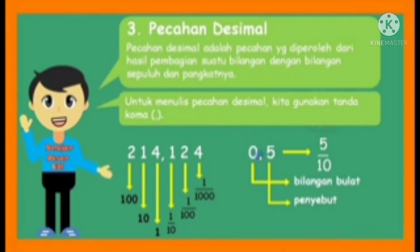Berarti jika 0,5 diubah dalam bentuk pecahan biasa akan menjadi 5/10. Kemudian untuk contoh lain, semua angka di belakang koma ditulis menjadi pembilang. Misalkan 1,15 menjadi 115/100. Seperti itu.